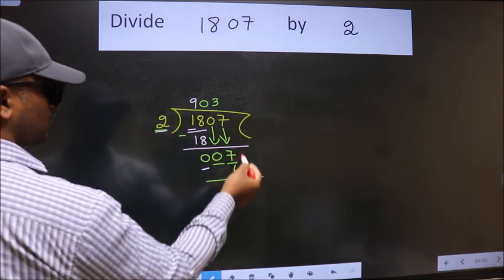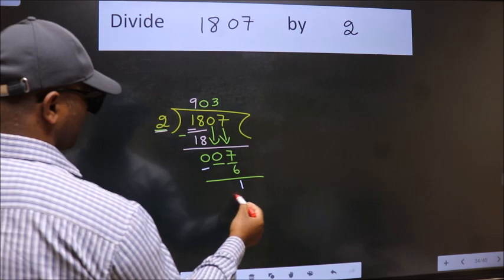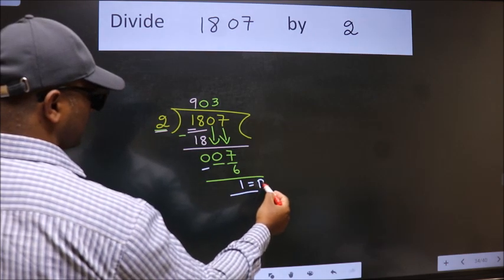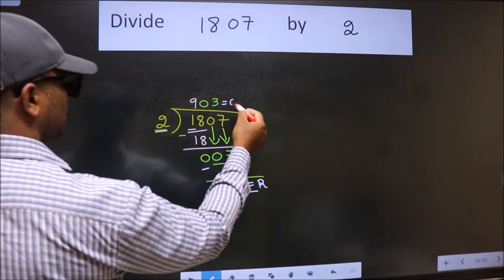No more numbers to bring it down. So we stop here. This is our remainder and this is our quotient.